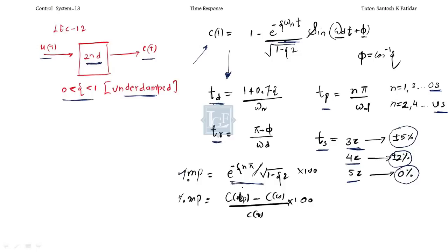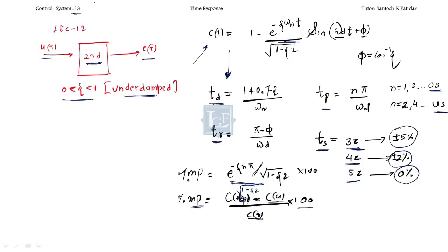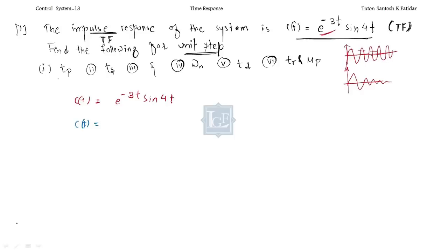Please do not make the mistake of omitting the term under the square root — I keep emphasizing this so you won't make that mistake. The maximum peak is the output at peak time minus steady state value, divided by steady state value, into 100 — this is in percentage. That was the brief recap of Lecture 12. Now I'll start Lecture 13, where we'll solve one question and then switch to steady state output.